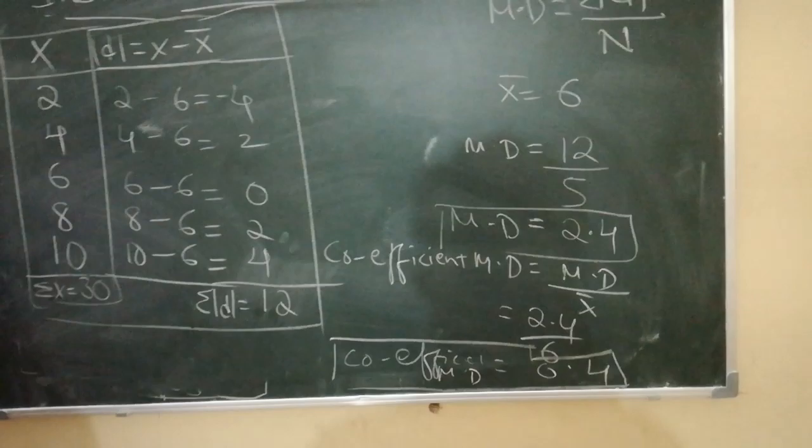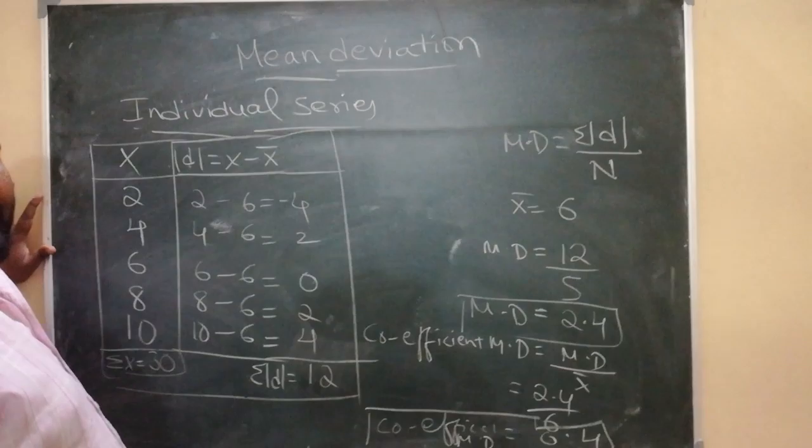So this is the way we have to find mean deviation under individual series through actual mean. Thank you.